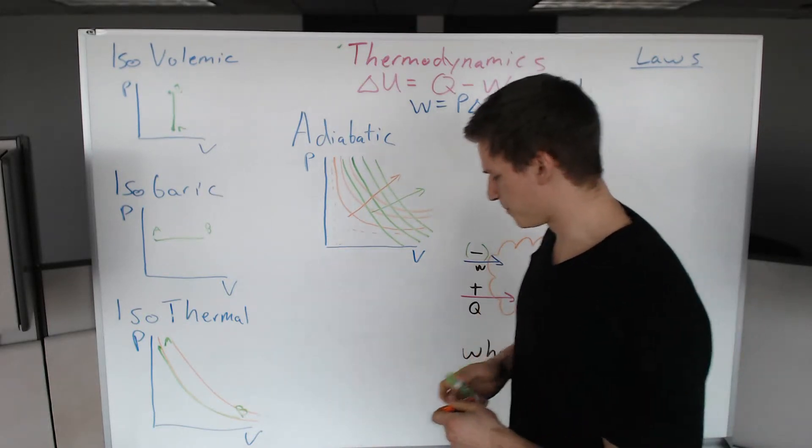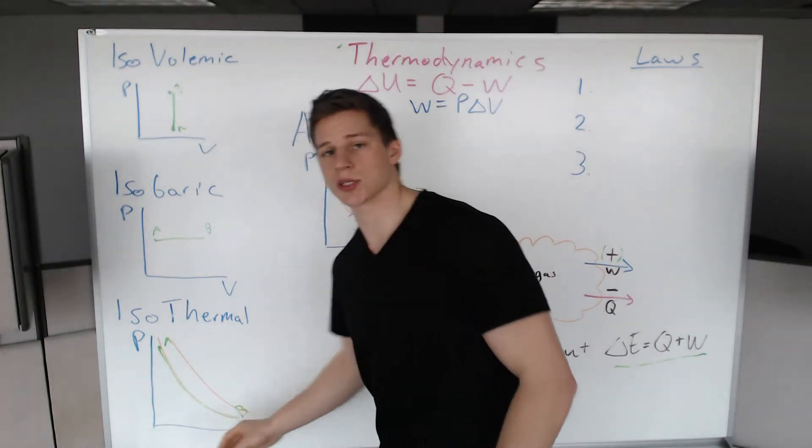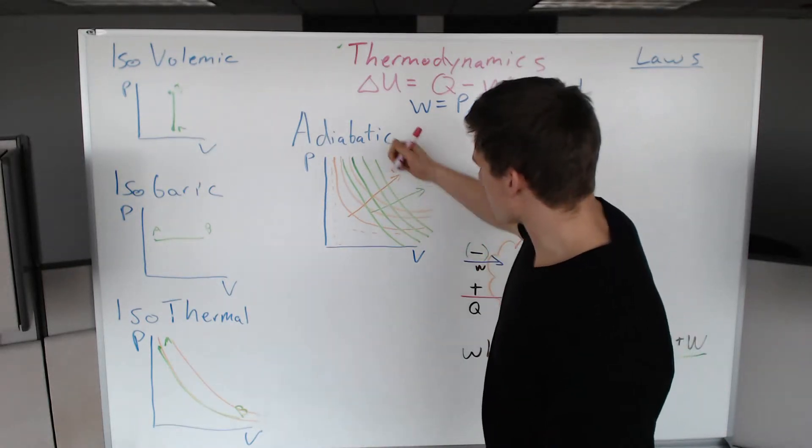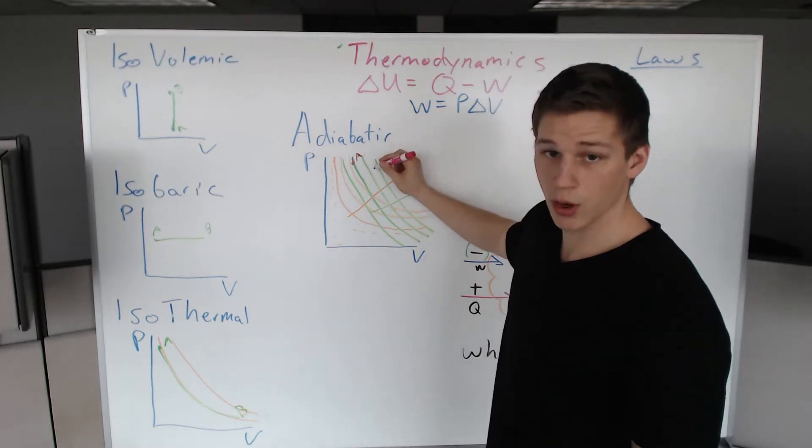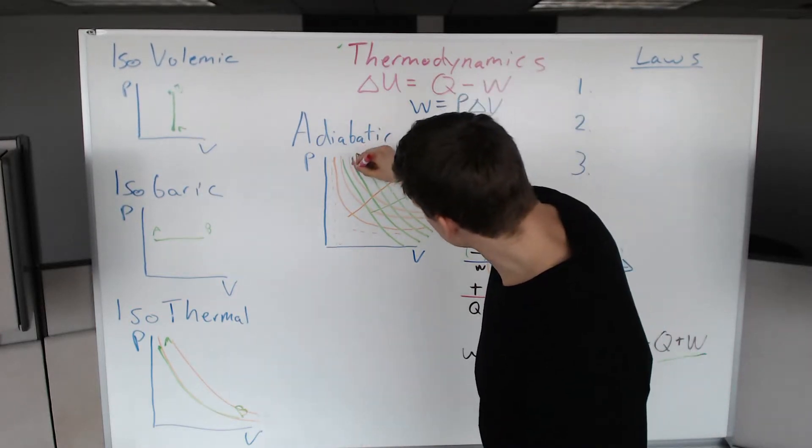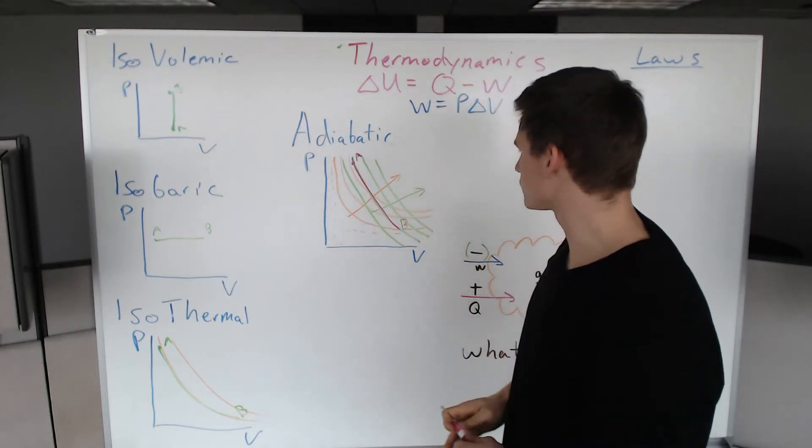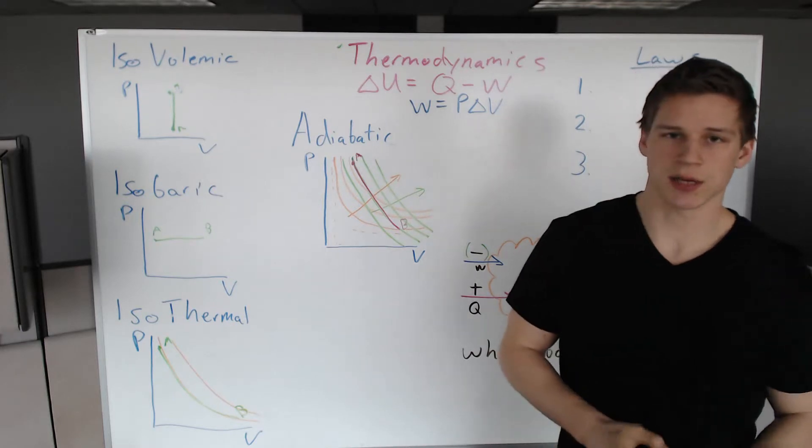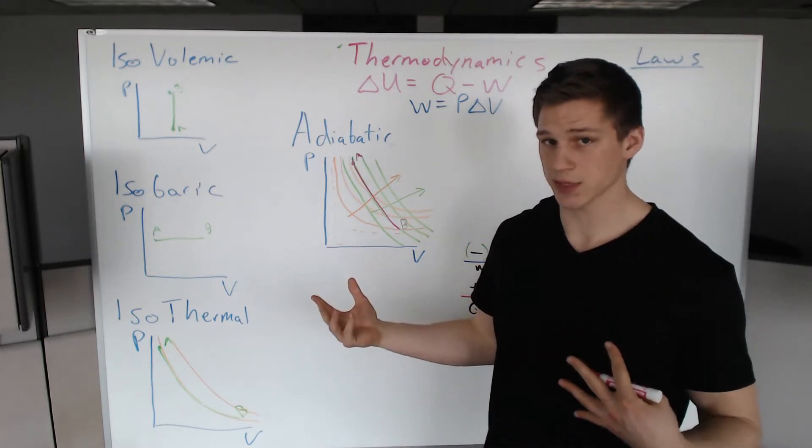Adiabatic process. What is it? The entropy of the system does not change, which means the internal energy of the system does not change. I'm going to use pink for this. That means we're just going to pick a line, start at A, and go all the way to B. So there is our B. That is an adiabatic process.